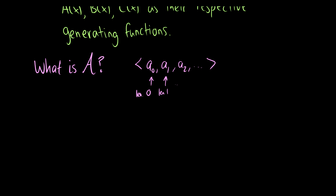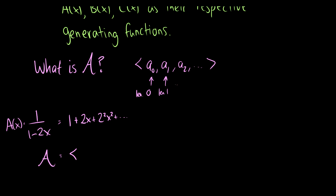So suppose we have the generating function 1 plus 2x plus 2² x² and so on. We know this is 1 over 1 minus 2x. This could be, say, A(x). Then this is a bijection with the combinatorial family A, whose sequence would be 1, 2, 2², 2³, so on and so forth. If two completely different problems give us the same generating function, then those two problems relate to the same combinatorial family.